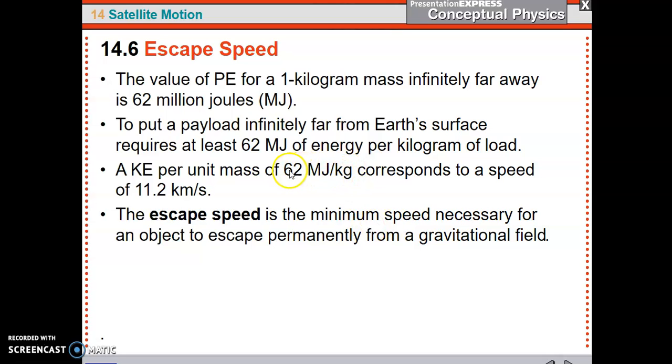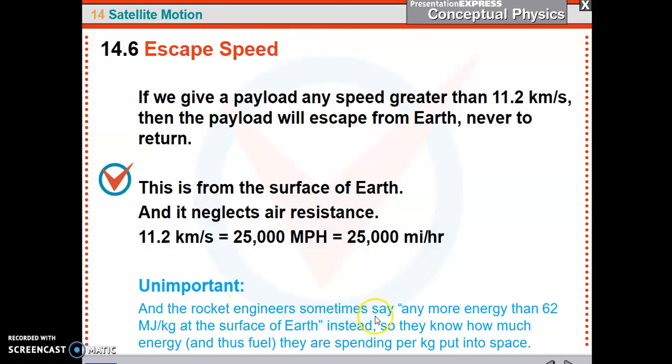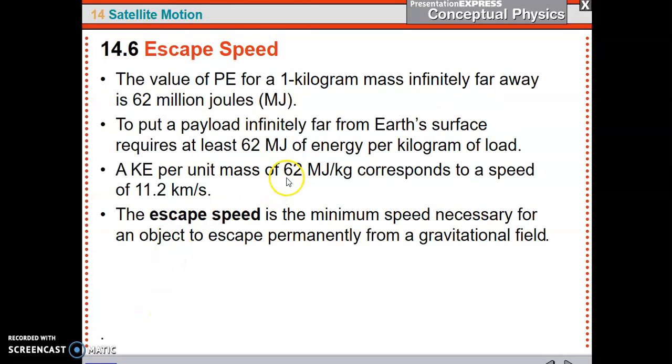How much work is required to move a payload against the force of gravity? We can skip this part. A lot. We have a number for it. There it is. 62 million joules per kilogram. So the reason that, you don't need to know this, but the engineers use this number, and I put it in back here. The rocket engineers sometimes say, any more energy than 62 megajoules per kilogram. So this is telling them how much energy, megajoules, and thus fuel they are spending per kilogram to put it into space. So 62 megajoules per kilogram means that you have to spend enough fuel for that. And how much does that cost? Well, when all is said and done, it costs about $10,000 per kilogram to put a satellite into orbit. $10,000 per kilogram. That's a lot of money.